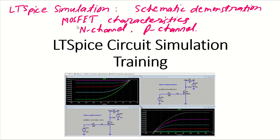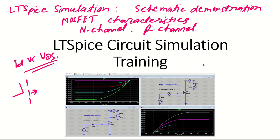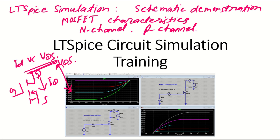Namaskar my dear friends. Let's talk about MOSFET characteristics simulation in LTSpice. We have N-channel MOSFETs and P-channel MOSFETs. The characteristic we are interested in is basically drain current ID versus VDS, that is drain to source voltage. Here is the MOSFET with drain, source, and gate. The current flowing is ID and the voltage at this node is VDS.